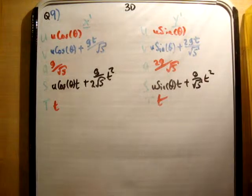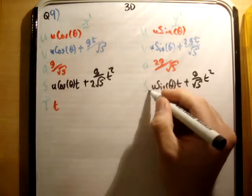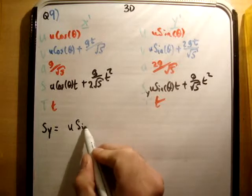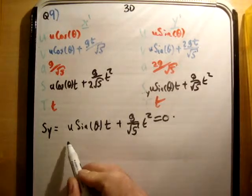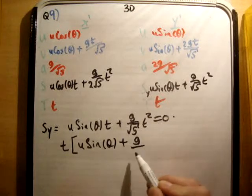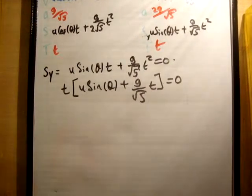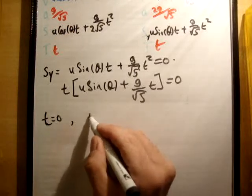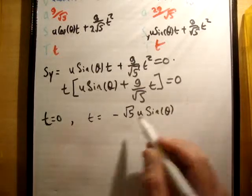We are told the particle lands on the plane, so the condition is s_y = 0. Setting u sin θ · t + g t²/√5 = 0 and factoring out t gives t(u sin θ + gt/√5) = 0. So either t = 0 (launch) or t = −√5 · u sin θ / g, which is the time of flight.